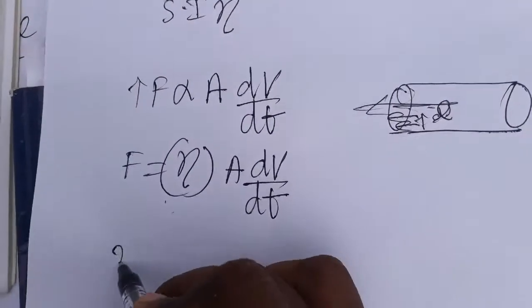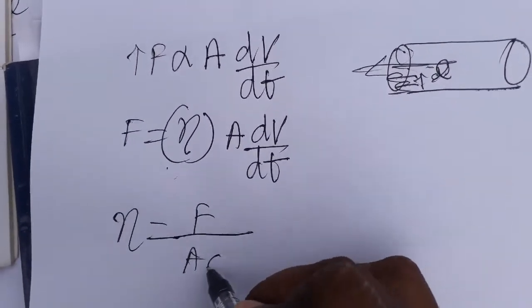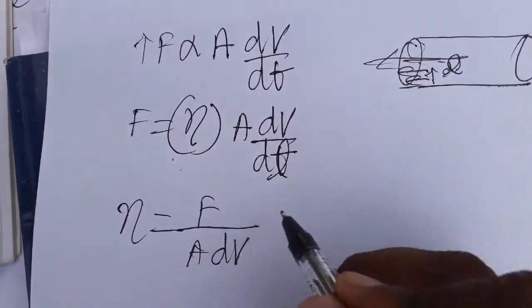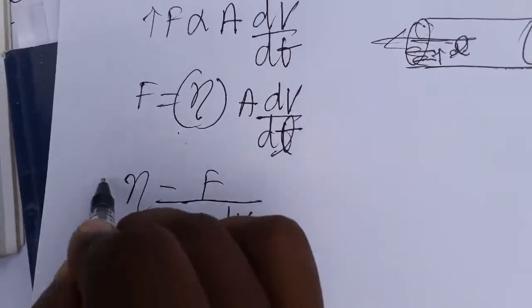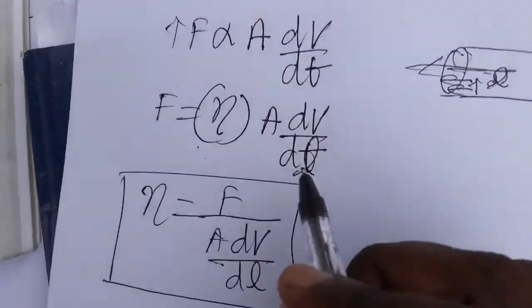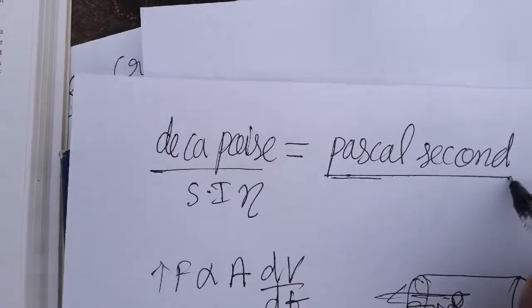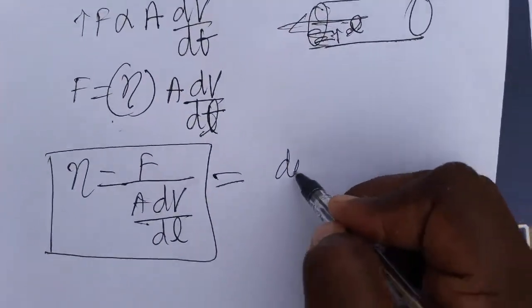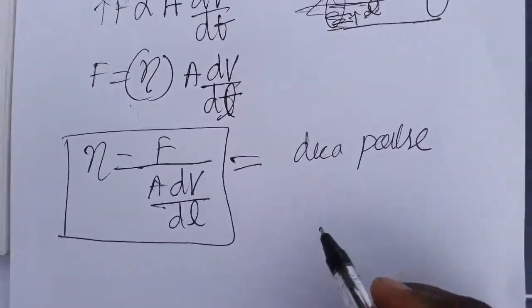So force is equal to coefficient of viscosity times A times dV/dt. Therefore, coefficient of viscosity is equal to force per unit area multiplied by the change in velocity divided by change in length. This is the coefficient of viscosity, and its unit is also equal to Pascal second, which we call Decapoise.